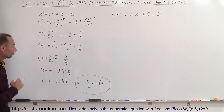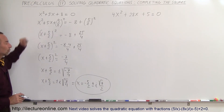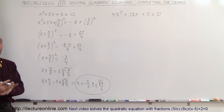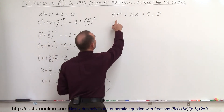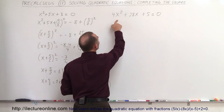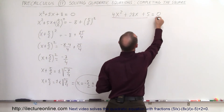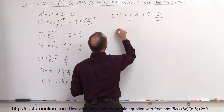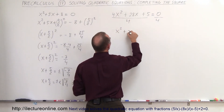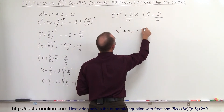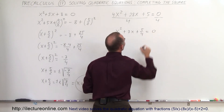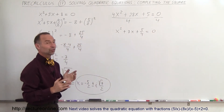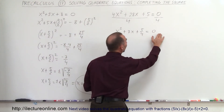And that's how we use the completing the square method to solve this quadratic equation. Now in this next example we have a 4 in front of the x² term. So the first thing we want to do is divide both sides of the equation by 4 to get rid of that. We end up with x² + 7x + 5/4 = 0.